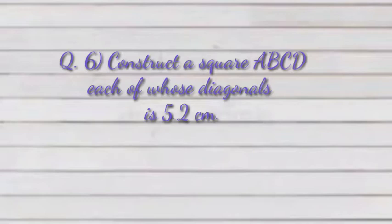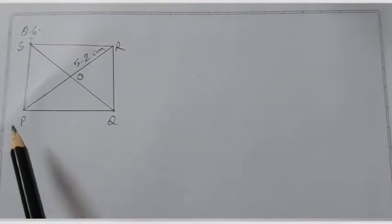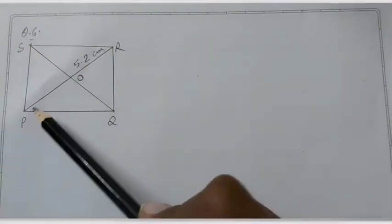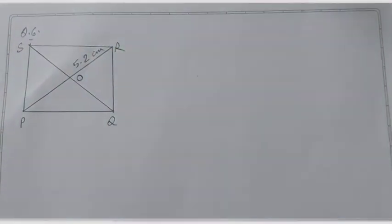Construct a square ABCD each of whose diagonals is 5.2 cm. We have to draw a square PQRS where diagonal is 5.2 cm.